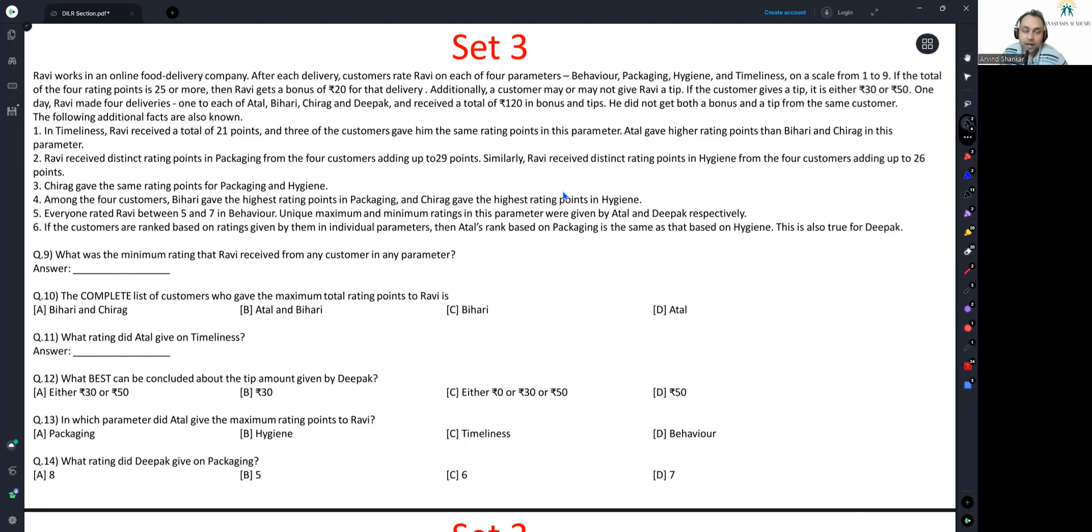Additionally, a customer may or may not give Ravi a tip. If the customer gives a tip, either it is 30 rupees or 50 rupees. One day, Ravi made four deliveries, one to each of Atal, Bihari, Chirag, and Deepak, and received a total of 120 bonus and tips. By this time, hopefully we have realized we have to make a matrix.